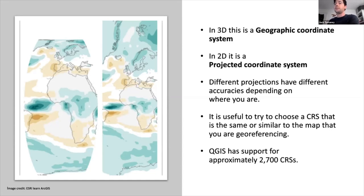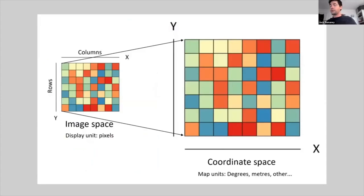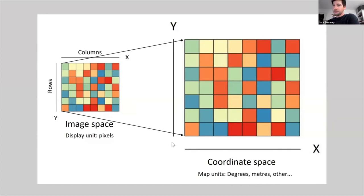It's important to choose a coordinate reference system based on the purpose of the map and the project. There are almost 3,000 different CRSs in QGIS. In essence, what we're doing in georeferencing is translating the image's internal reference system into a coordinate reference system — the input units are pixels, and once georeferenced the image is in map units such as degrees or meters — though in actuality images also need to be transformed to fit the CRS.